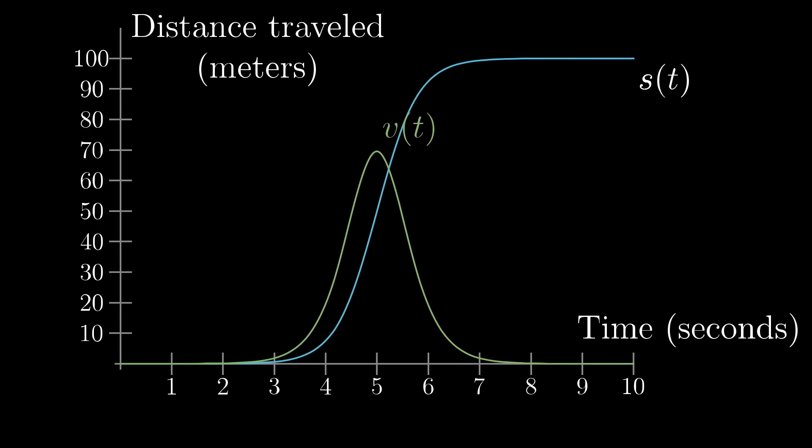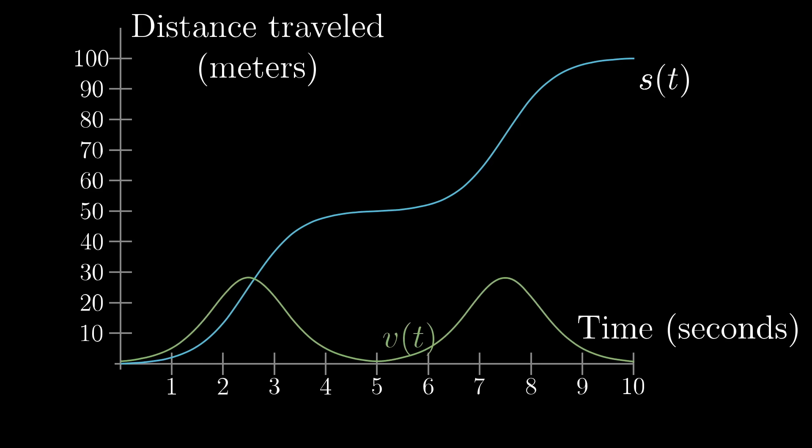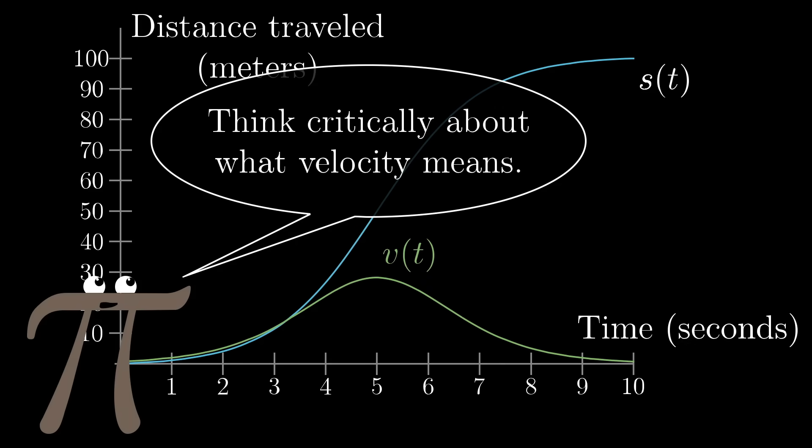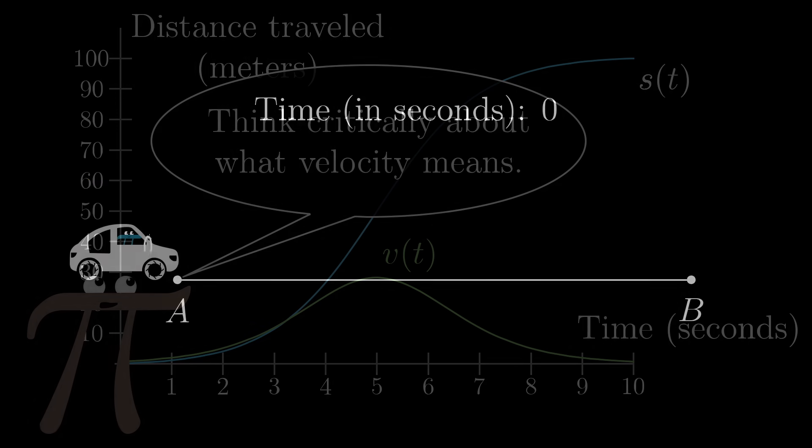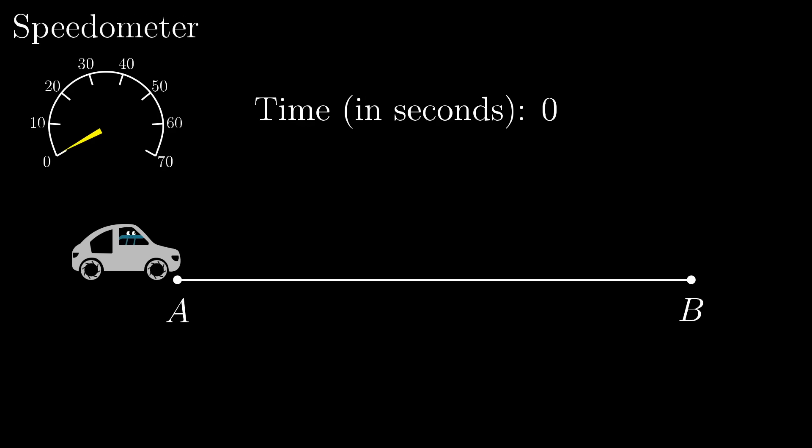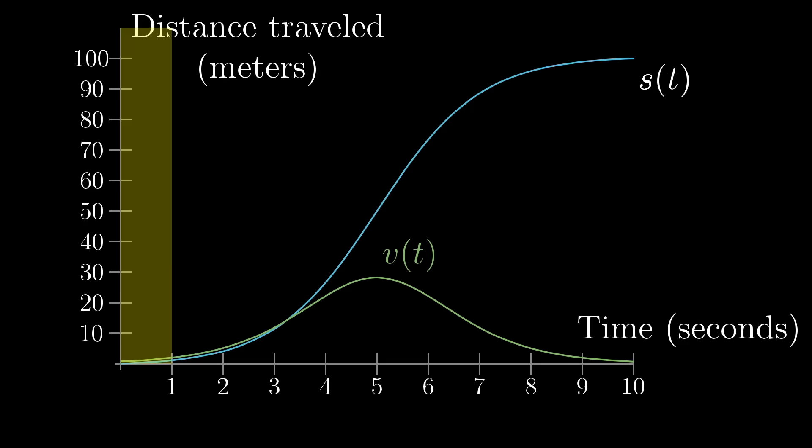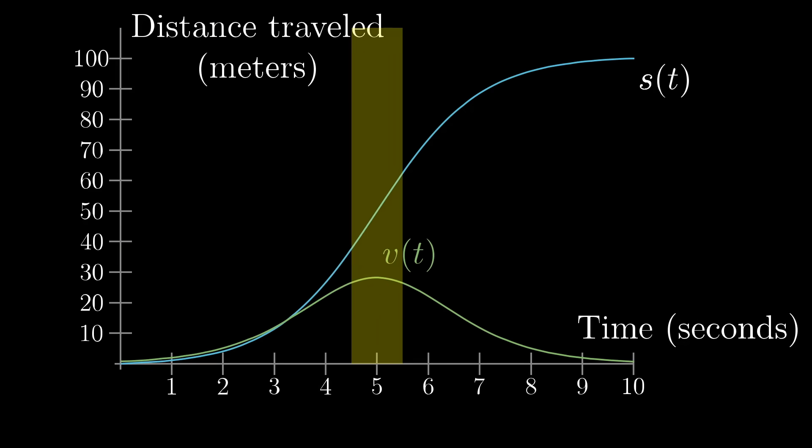And what we want to understand is the specifics of that relationship. Exactly how does velocity depend on a distance vs. time function? And to do that, it's worth taking a moment to think critically about what exactly velocity means here. Intuitively, we all might know what velocity at a given moment means. It's just whatever the car's speedometer shows in that moment. And intuitively, it might make sense that the car's velocity should be higher at times when this distance function is steeper, when the car traverses more distance per unit time.